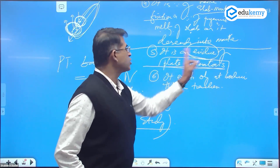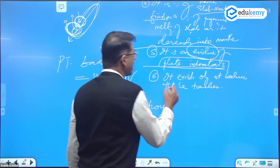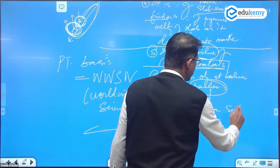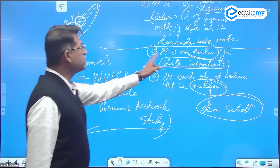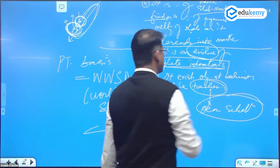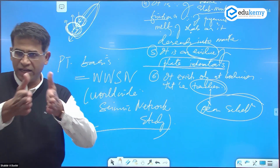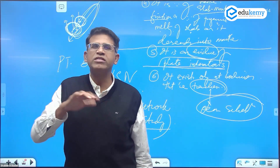It exists only at boundaries that have trenches. Wherever there is a trench, that is where we have ocean subduction going on. Wherever there is a trench, there is subduction, and if there is subduction, we will have the Benioff zone. So it is evidence of plate tectonics and it exists only at boundaries that have trenches.